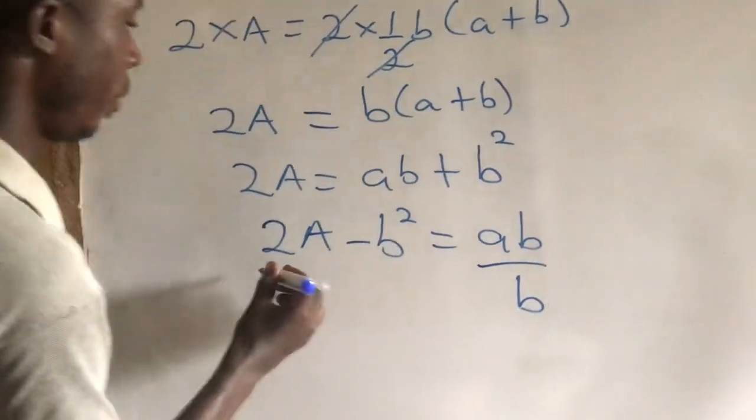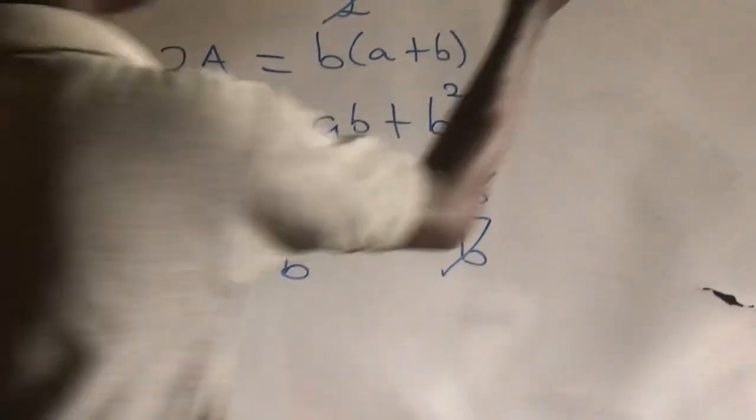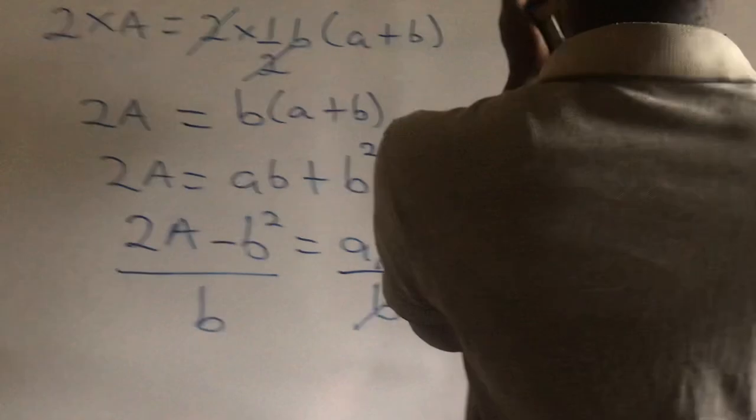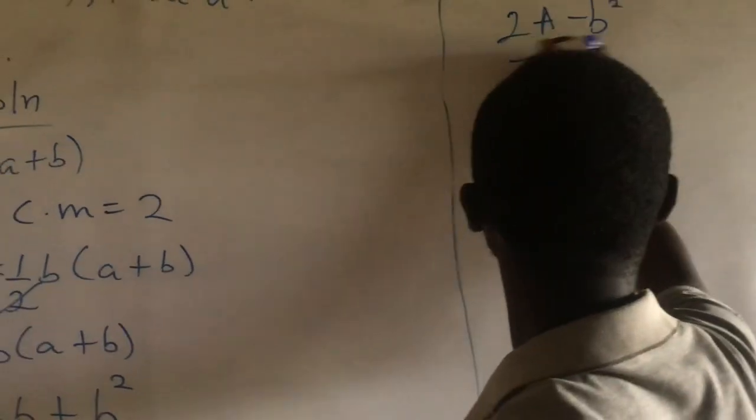Now, we divide through by B, so this will cancel this. So it becomes A is equal to 2A minus B squared over B.